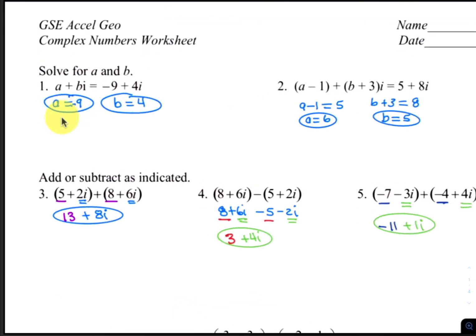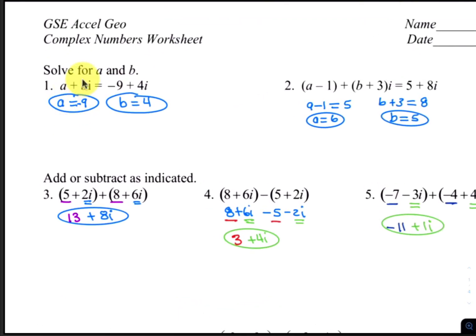Starting with number 1, we have two complex numbers that are equal to each other, so the real parts have to be equal and the imaginary parts have to be equal. The real parts are a and negative 9, so a must be equal to negative 9. The imaginary parts are b and 4, so b must be equal to 4.